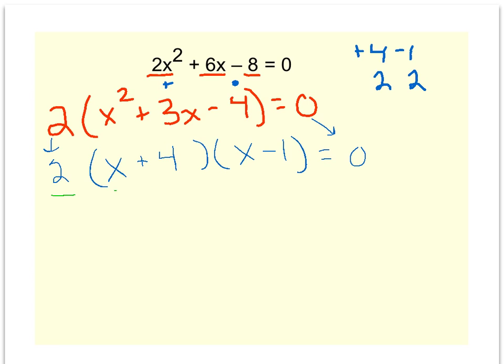And now I remember, I've got three terms to set equal to 0. 2 equals 0, x plus 4 equals 0, x minus 1 equals 0. Well, 2 will never equal 0, so I can get rid of that choice or that option.